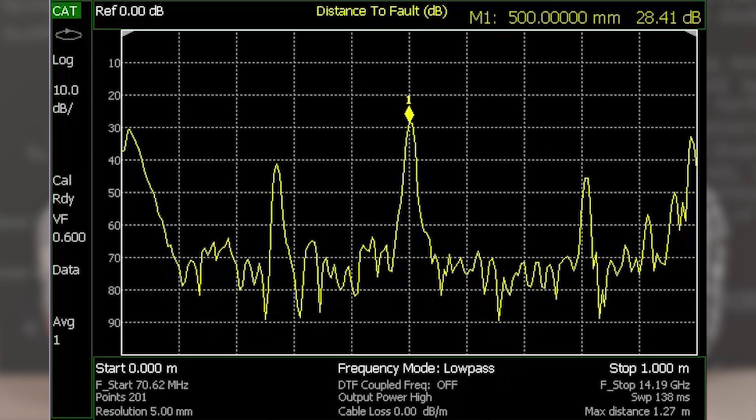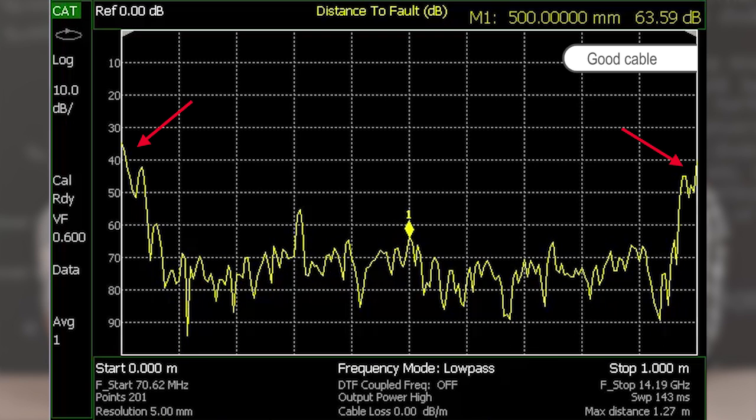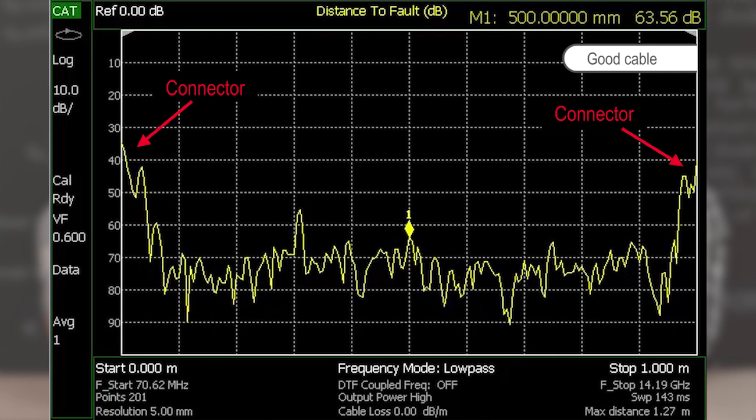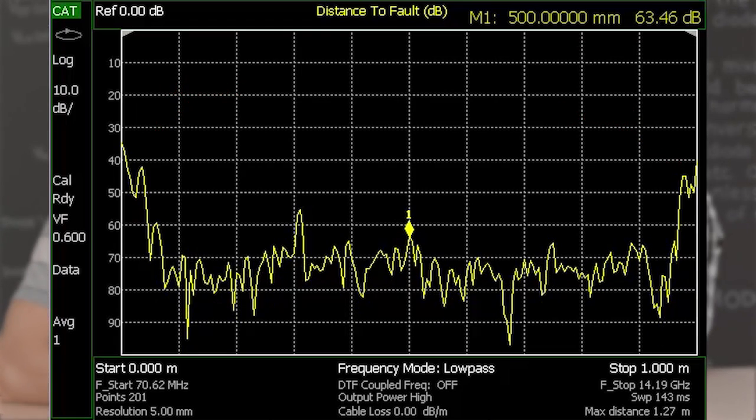If we were to plug a perfect cable into port one, what you'll see is two peaks at the beginning and the end which represent points along the cable where the connectors are, and that's just the power reflecting back into the FieldFox off the cable's ends.